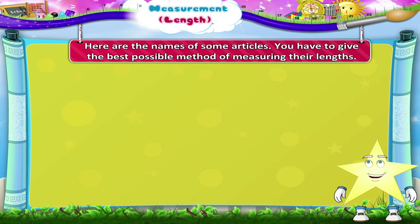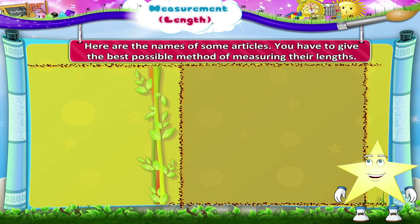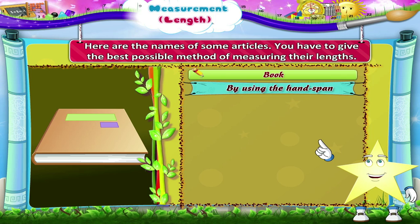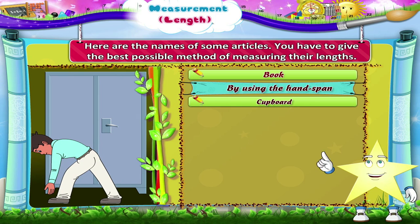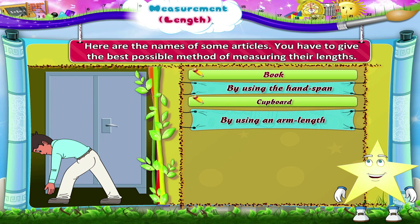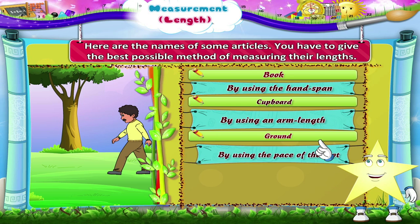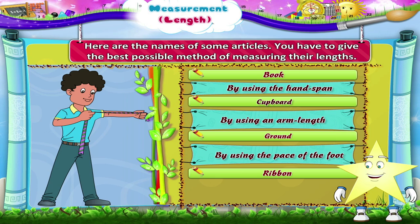Starry, here are the names of some articles. You have to give the best possible method of measuring their lengths. The first one is a book — you measure its length by using the span of your hand. The height of the cupboard is best measured by an arm length. The length of the ground is measured by using the pace of the foot. The last is the length of the ribbon, which we can measure using an arm length.